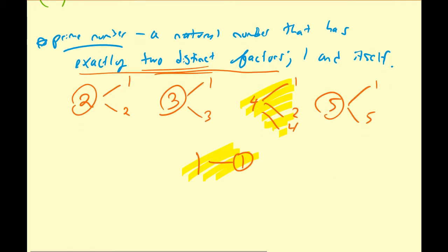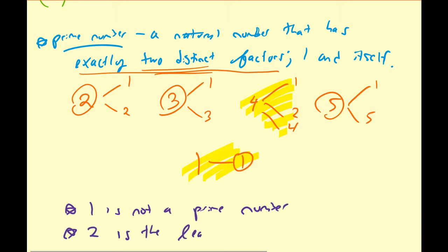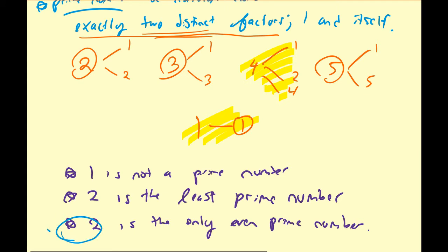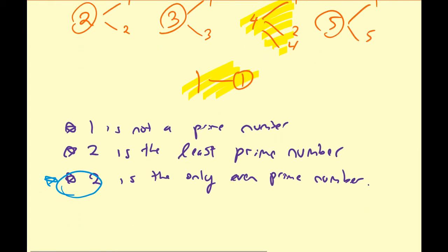Here are some key properties of prime numbers. First, 1 is not a prime number. Second, 2 is the least prime number. And third, 2 is the only even prime number. I'll leave it as an exercise to prove that 2 is the only even prime — it's a very easy thing to justify.